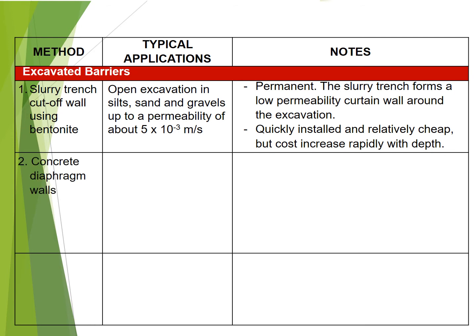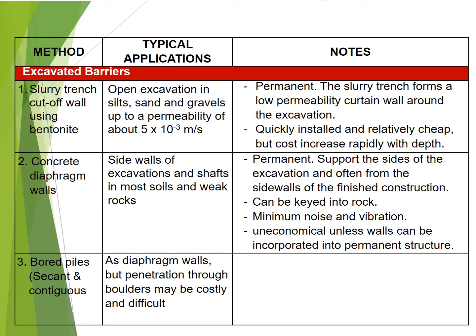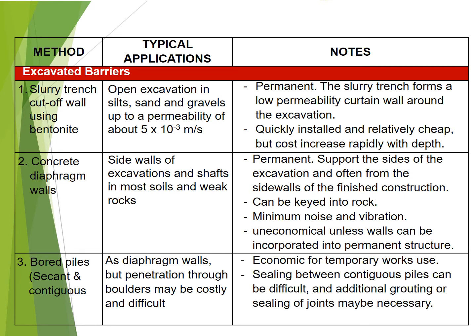2. Concrete diaphragm walls: used for side walls of excavations and shafts in most soils and weak rocks. Permanent. They support the sides of the excavation and often form the side walls of the finished construction. Can be keyed into rock. Minimum noise and vibration. Uneconomical unless walls can be incorporated into the permanent structure. 3. Bored piles, secant and contiguous: as diaphragm walls, but penetration through boulders may be costly and difficult. Economical for temporary works use. Sealing between contiguous piles can be difficult, and additional grouting or sealing of joins may be necessary.